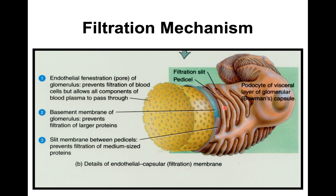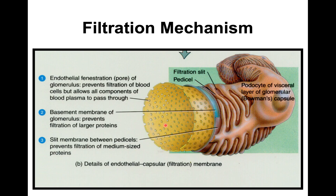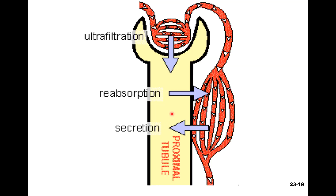Not only does filtrate have to fit through the fenestrations, it also has to fit through the filtration slits. This double filtration mechanism ensures that items too large — like blood cells and large proteins — are held back in the blood supply. Key terms: when fluid moves from the glomerulus into the capsular space, it's called filtration (sometimes ultra-filtration). When solutes or fluids move from the tubule back into the blood, it's called reabsorption. In the opposite direction — from blood into the tubule — it's called secretion. Do not mix up reabsorption and secretion.